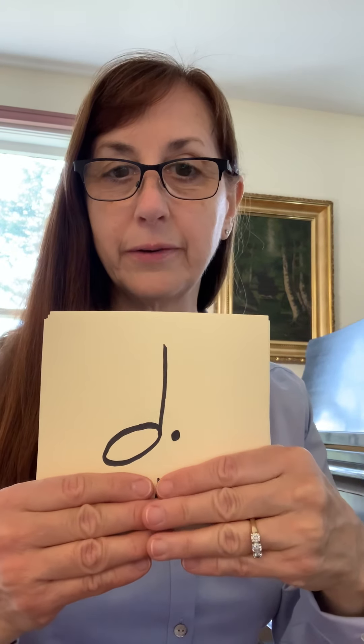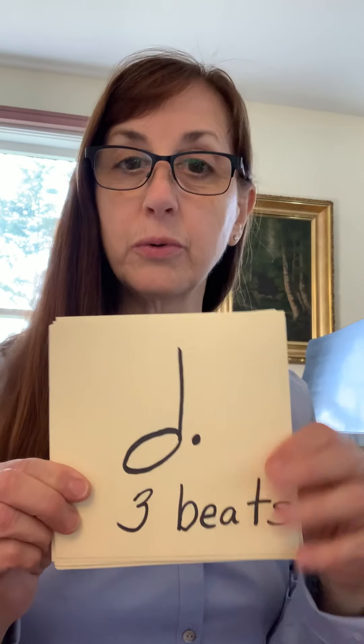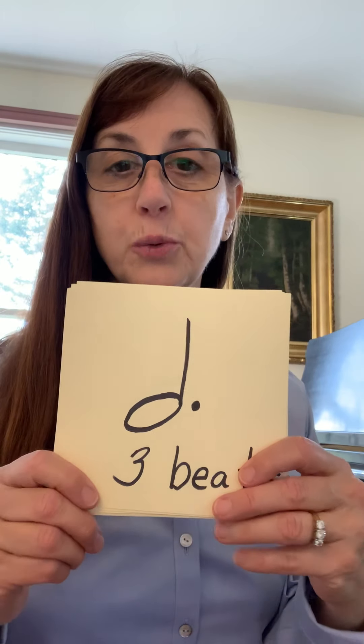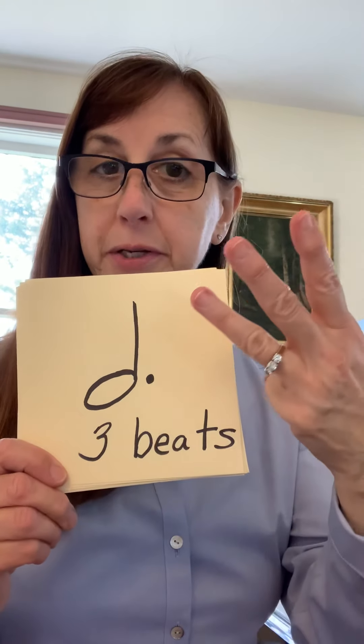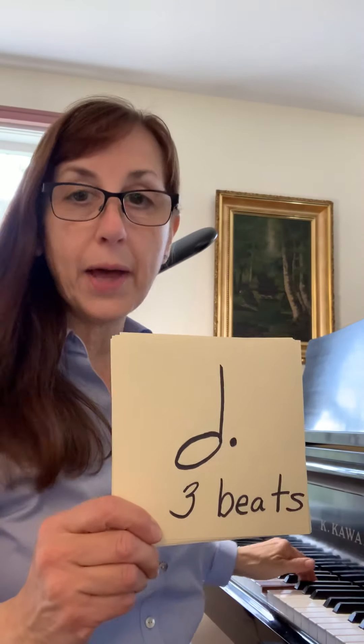Next one. This one has the dot. This is a dotted half note. The dot gets half the value of the note. So if the note gets two, half of two is one. So two plus one is three. This is a three-beat note, a dotted half note. So we give it three numbers when we count: one, two, three.